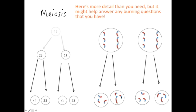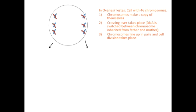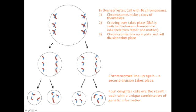Each of these four cells has different genetic information. To put this all together: we start in the ovaries or testes with a cell with 46 chromosomes. The chromosomes make a copy of themselves, then crossing over takes place whereby DNA is switched between chromosomes inherited from the father and the mother. The chromosomes then line up in pairs — all 23 pairs — and the first cell division takes place, moving chromosomes to either side of the cell. Then a second cell division takes place, and because of the crossing over you end up with four daughter cells, each with a unique combination of genetic information.